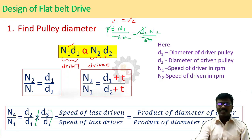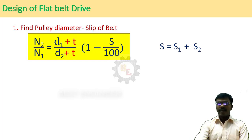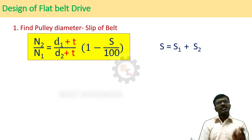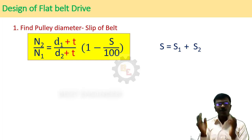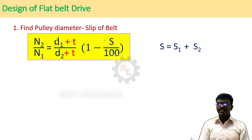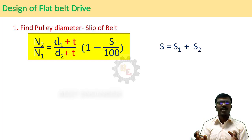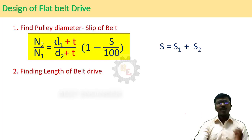In case slip is given, we have to use a modified formula. Here S is the slip. If both the driver and driven pulleys have some slip, we add both values S1 and S2. This slip is expressed as a percentage, and we have to reduce this value — so we cannot get 100% efficiency.